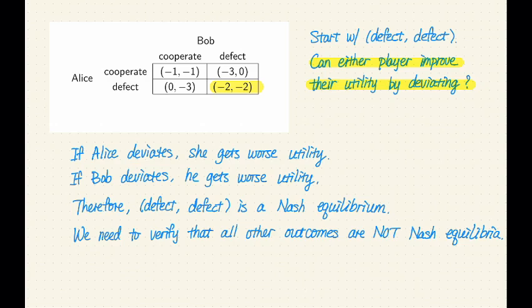If you can find a player that prefers to deviate, that can improve their utility by deviating, then this outcome is not a Nash equilibrium. If no player wants to deviate, then this outcome is a Nash equilibrium.